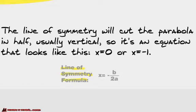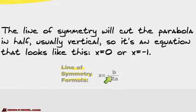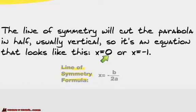Remember when we had the a, the b, and the c in the equation? This is how you find the line of symmetry: x equals negative b over 2a. That's your line of symmetry — that's where it's going to go. If it was 0, you would draw a vertical line at x equals 0, and that's where the parabola is symmetrical around.